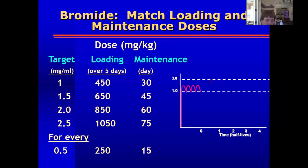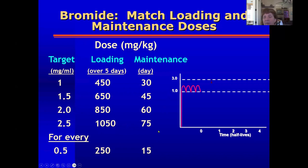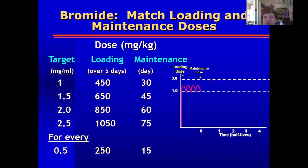This is reminding people about the difference between the loading dose and the maintenance dose. The magnitude of the difference depends upon the half-life of the drug. For bromide, the loading dose is about 15 times the maintenance dose. For phenobarbital, with a much shorter half-life, the loading dose is only about three to four times the maintenance dose.